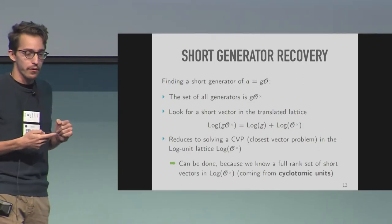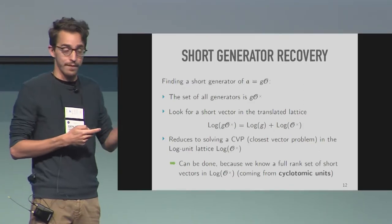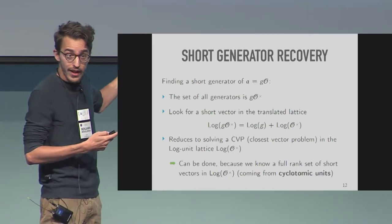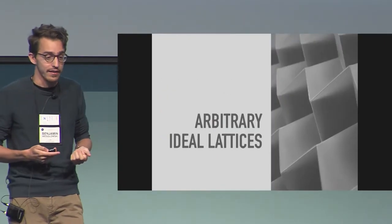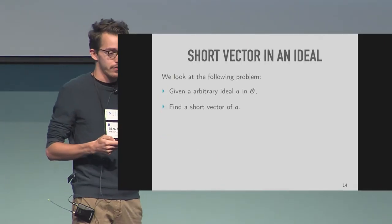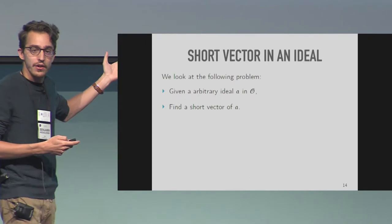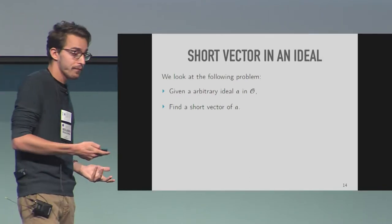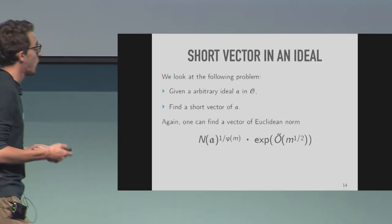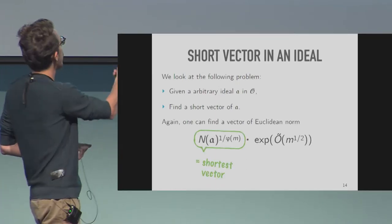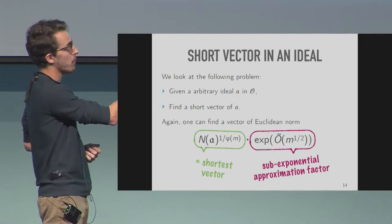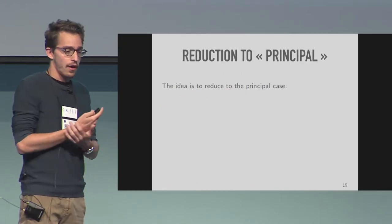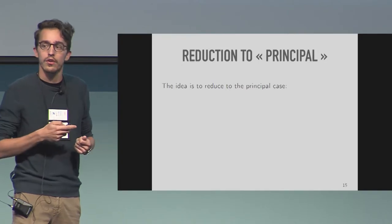That covers the part dealing with principal ideals. What about the general case? You're given an arbitrary ideal — it's not principal, doesn't have a generator, so you cannot look for a short generator. Instead, we're going to find a short vector in this ideal — the same quantity as before: the length of the shortest vector times the approximation factor we're trying to reach. The idea is to reduce again to the principal case.